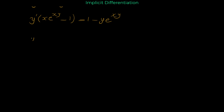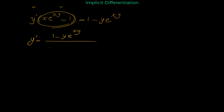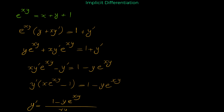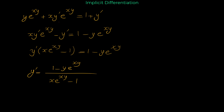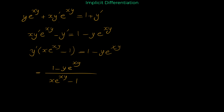Dividing both sides by the bracket: y′ = (1 − y·e^(xy)) / (x·e^(xy) − 1). So dy/dx, the derivative of the function y with respect to x for this given equation, is this expression.